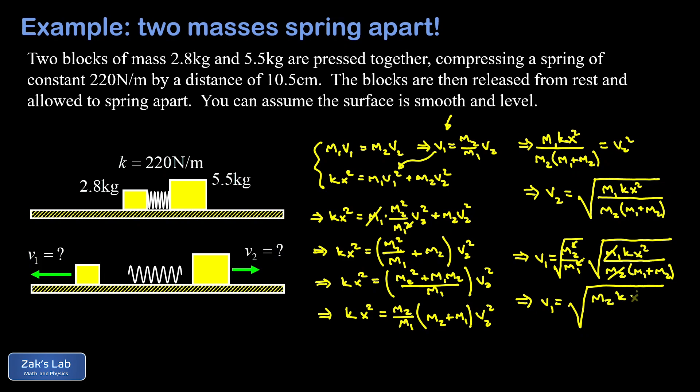Now we can go ahead and plug in numbers into these formulas: m1 is 2.8, m2 is 5.5, k is 220, and the initial compression is 0.105 because we had to change it to meters. When I run the numbers to three significant digits, I get all the same results.